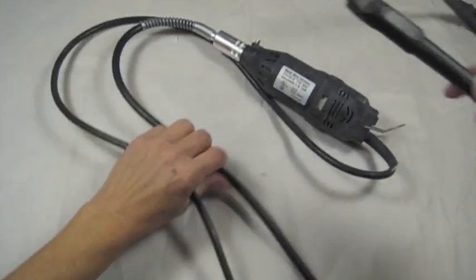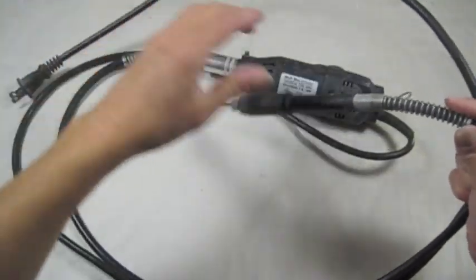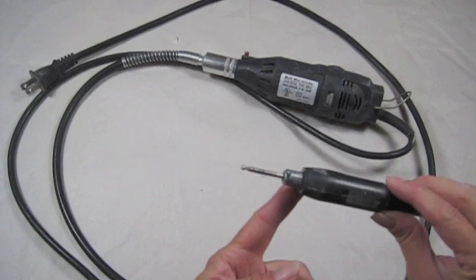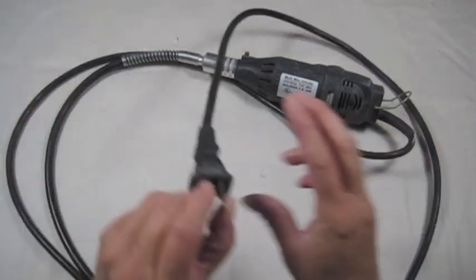This is a flex shaft tool. You've probably also heard it called a Dremel tool. It's a handheld rotary tool with a flex shaft. This is where you put your diamond bit in the end of the flex shaft.